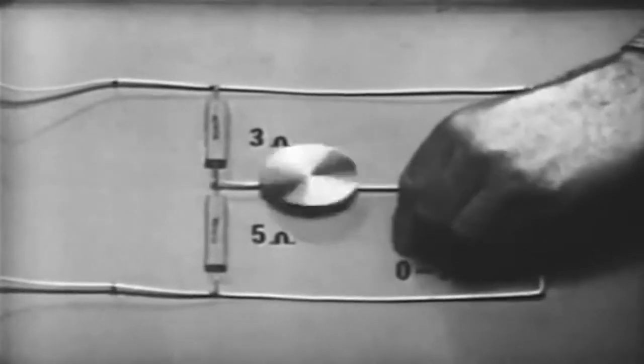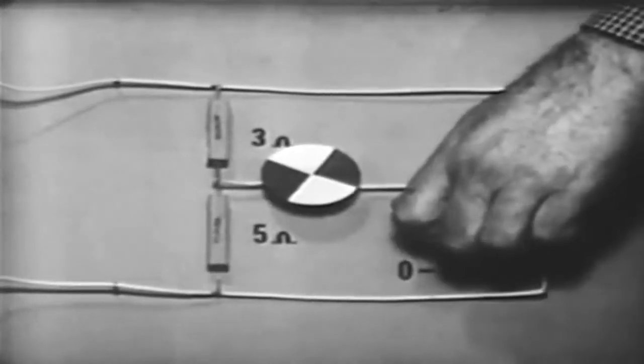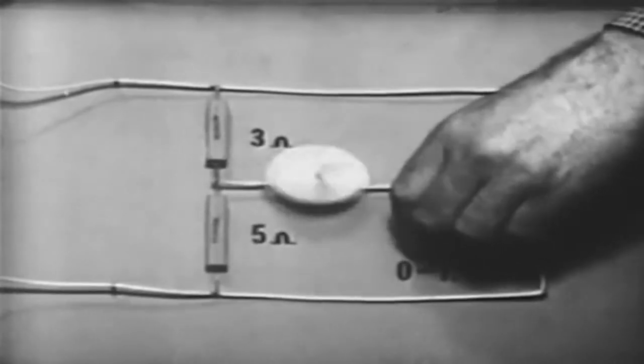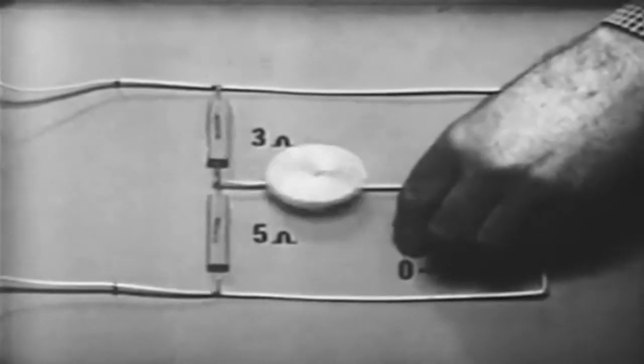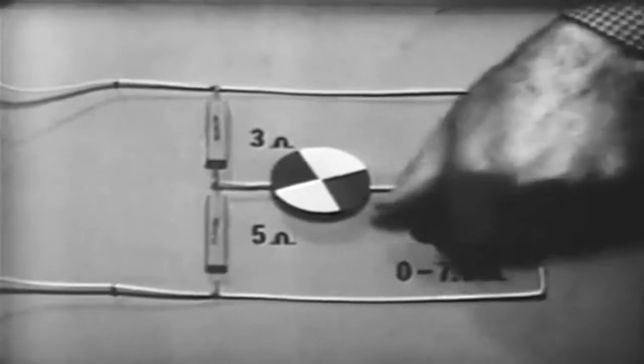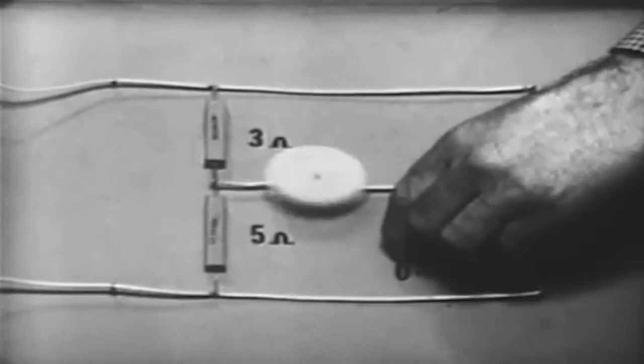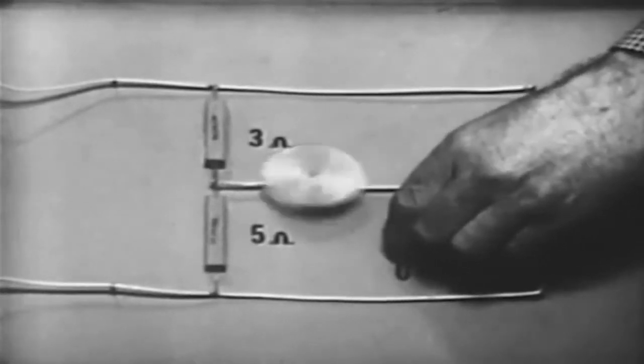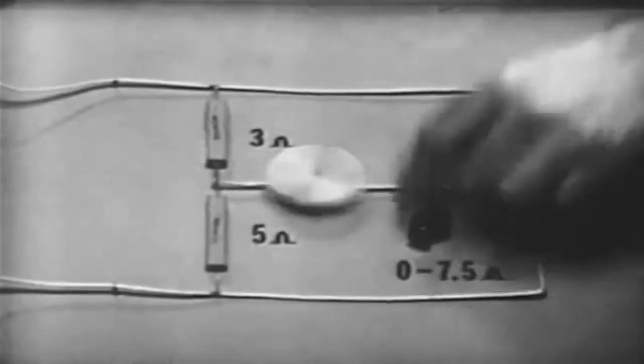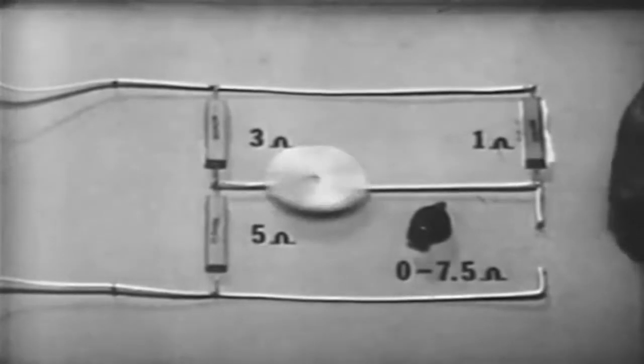Off course in one direction causes the motor to turn clockwise to correct the course. Off in the opposite direction causes the motor to turn counterclockwise to correct the course. Slightly off balance causes the motor to turn slow. A greater off balance causes the motor to turn faster.